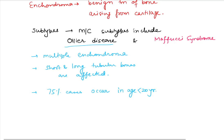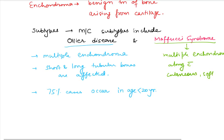In Maffucci syndrome, patients have multiple enchondromas along with cutaneous, soft tissue, or visceral hemangiomas. This is an important distinguishing feature to note.